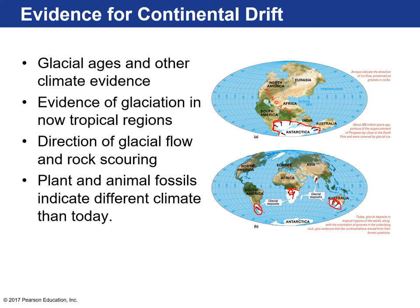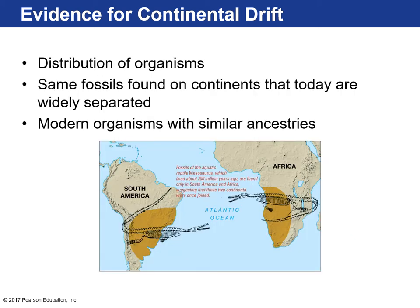In addition to the climate evidence, he also collected a lot of plant and animal fossils, which is very important because plants and animals only live in certain environments. One fossil here was a dinosaur that only lived in freshwater — kind of like a modern-day alligator, but a dinosaur. A freshwater reptile. And you find this fossil in both South America and in Africa.